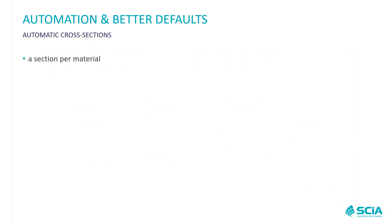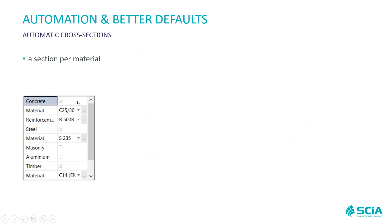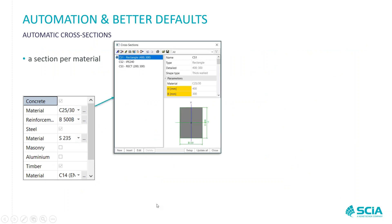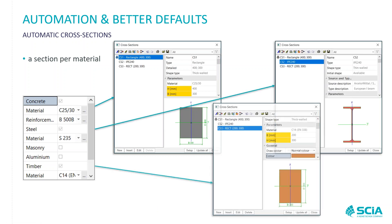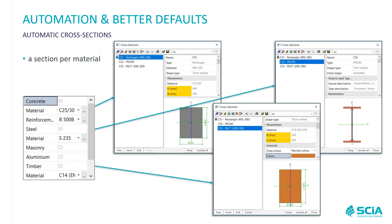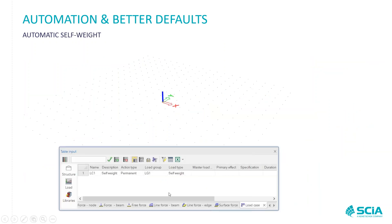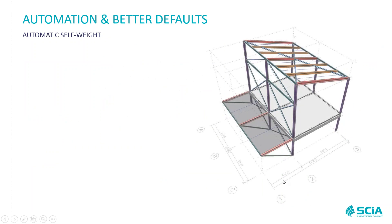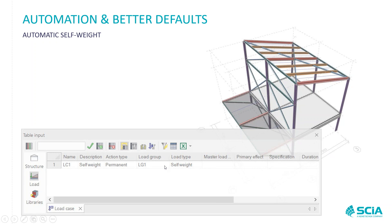Another automatic feature is automatic cross-sections. When you activate materials — concrete, steel, aluminum, timber — one section gets created per material. For simple projects it's nice to have a default value to start with. Also, the self-weight load case now gets generated automatically, so if you model a small structure and want to run analysis immediately, the self-weight load case is already there.